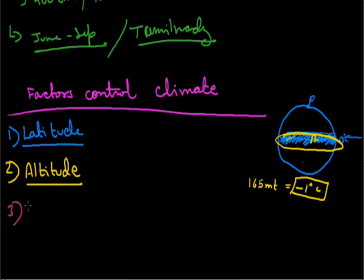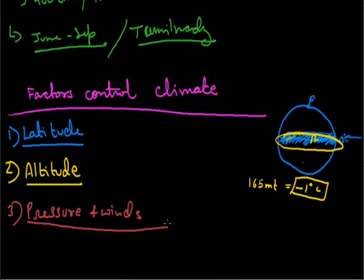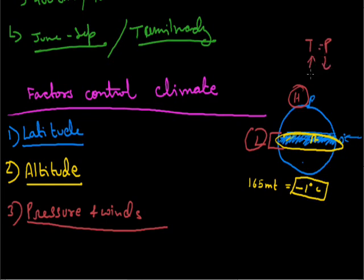The next factor is pressure and winds. Where the temperature is high, the pressure is low, and where the temperature is low, the pressure is high — temperature and pressure have an inverse relationship. Because of this, winds move from high pressure to low pressure regions. Since these winds are cold, they affect the temperature and weather of particular areas, controlling the climatic conditions of that region.